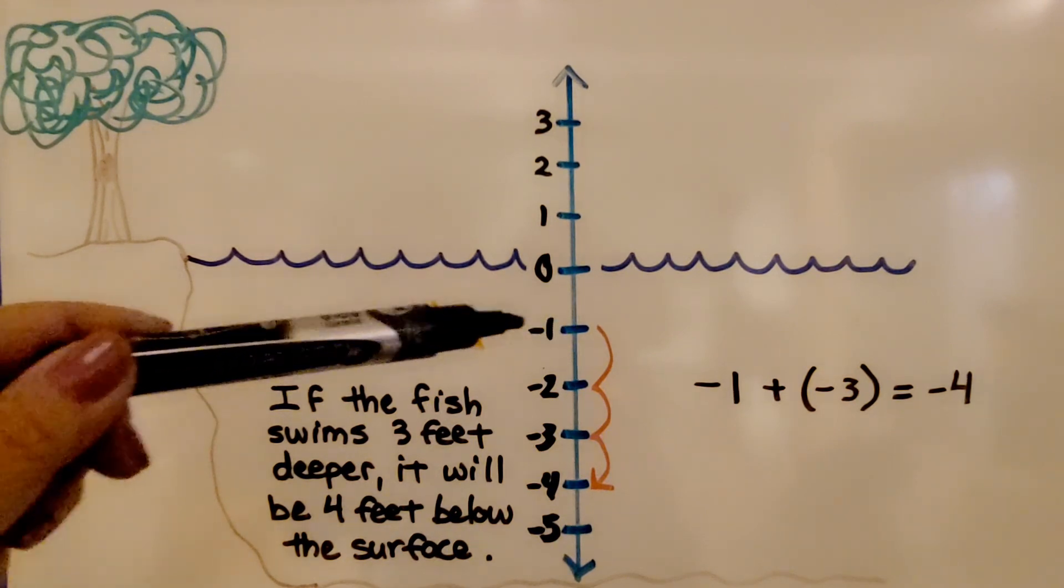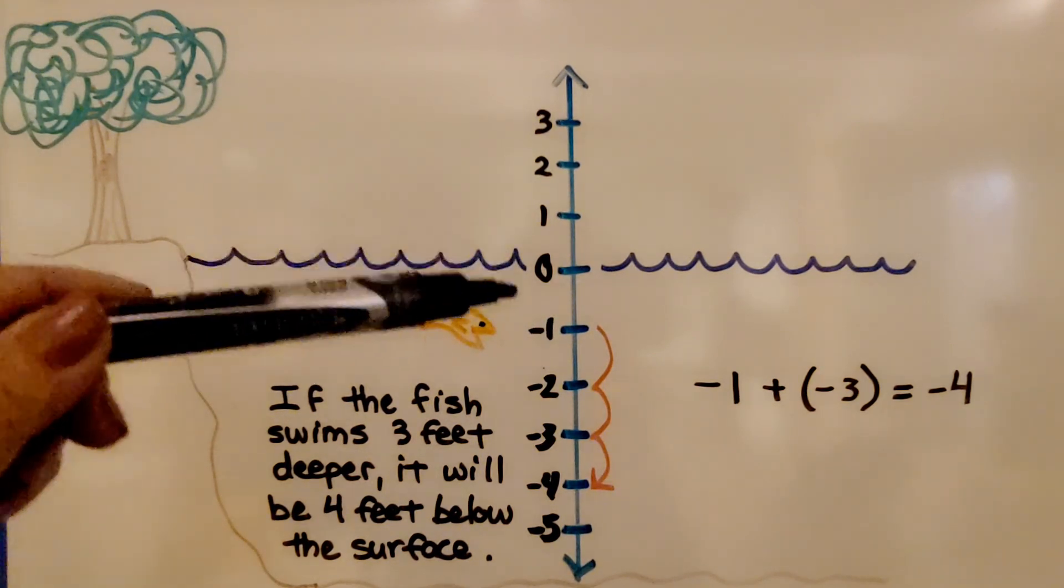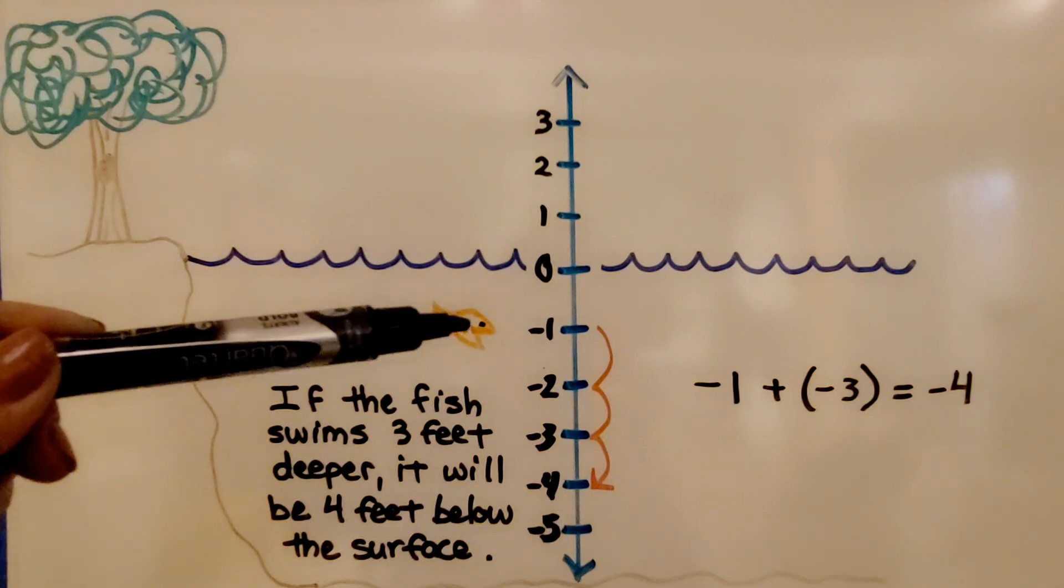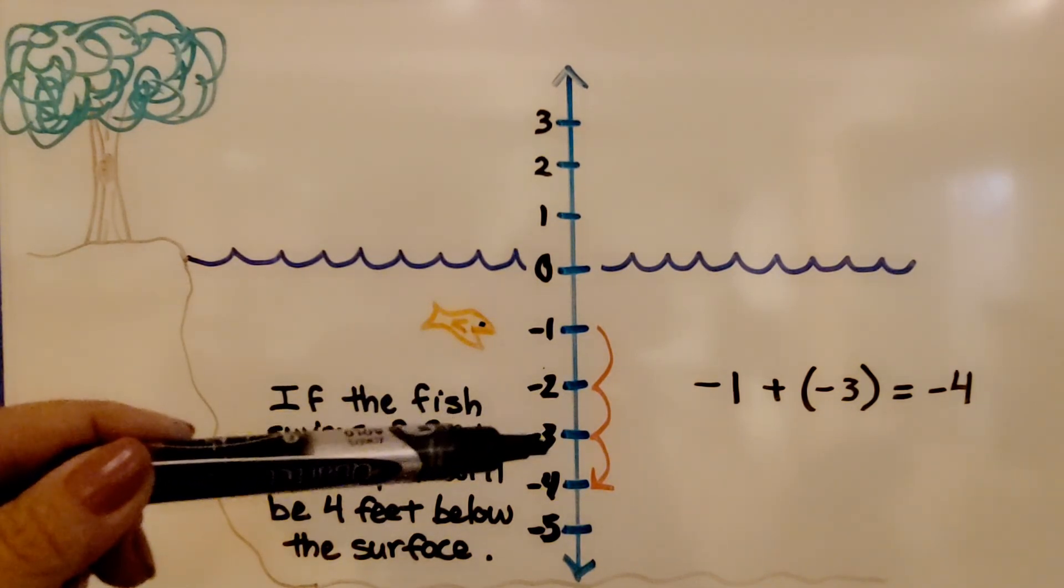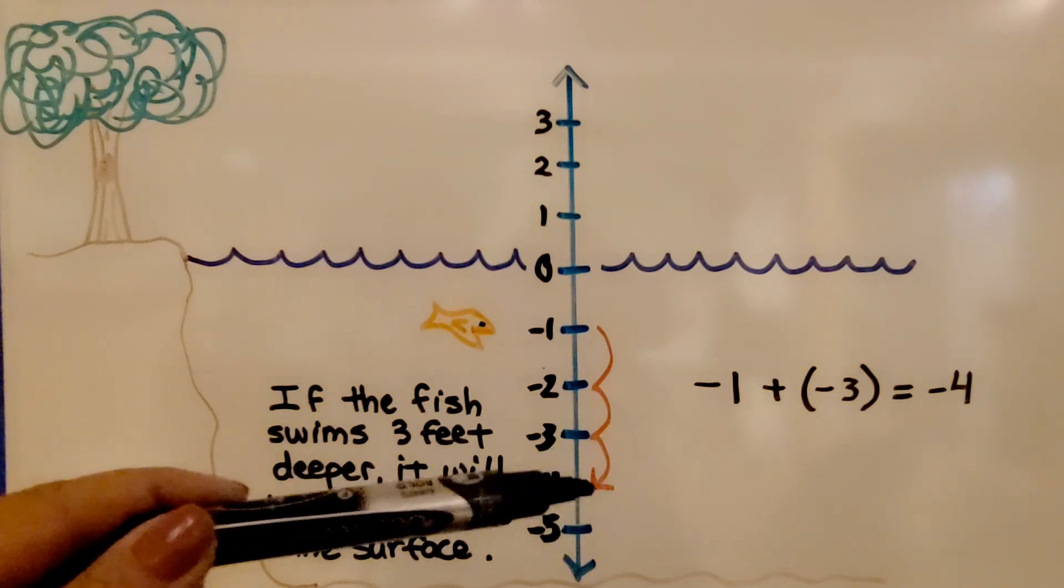If this was feet, we could say it's one foot below the water. If it swims three feet deeper, it will be four feet below the surface. It will be at negative four feet.